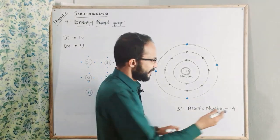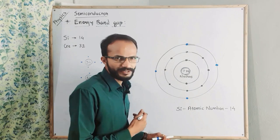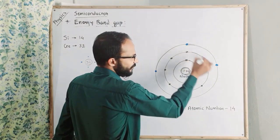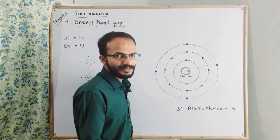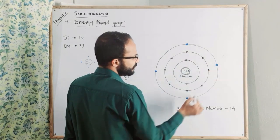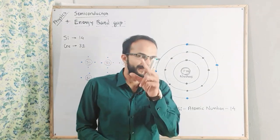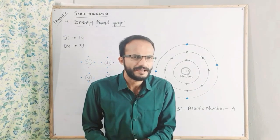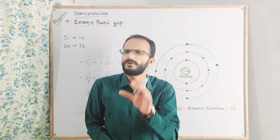But how many electrons do we have? This is two, and this is eight. Two plus eight is ten. And how many electrons do we have remaining? One, two, three, four. So the balance is four electrons in the third orbit.